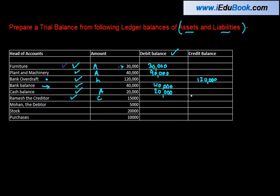Ramesh the creditor — a creditor is a liability, so the balance is a credit balance and we write it in the credit column. Mohan the debtor — the debtor is an asset because we have to get money from him, so it has a debit balance and we write it in the debit column. Stock is again an asset, so we write it in the debit column.